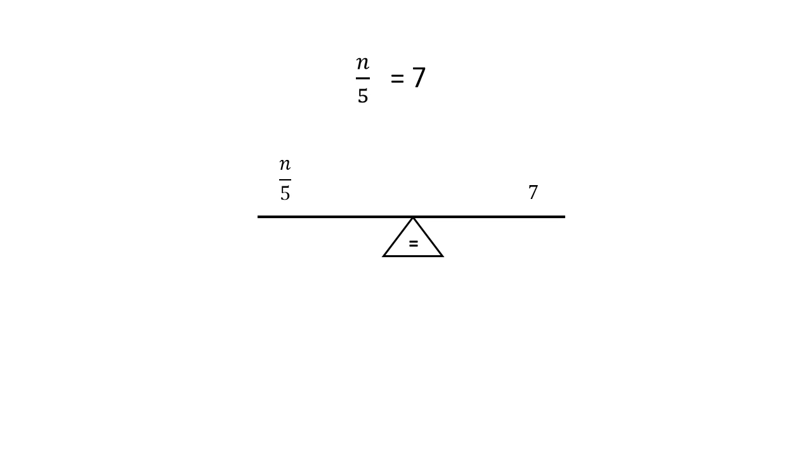Now let's look at an equation where my variable is being divided by a number instead of being multiplied times a number. In this equation, I have n divided by 5 equals 7. So to undo division, we multiply. So the way that I'm going to multiply is remember that this is a fraction. When I want to multiply by 5, I'm really multiplying by 5 over 1. And over here, I would also say 5 over 1.